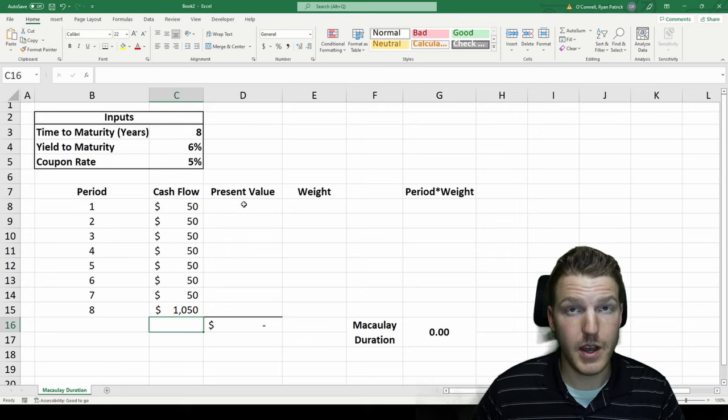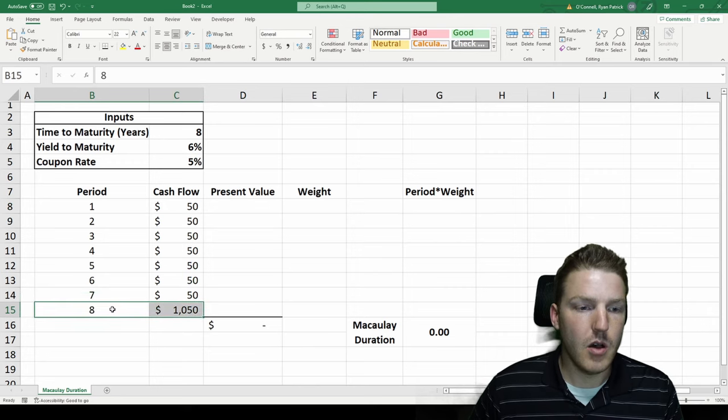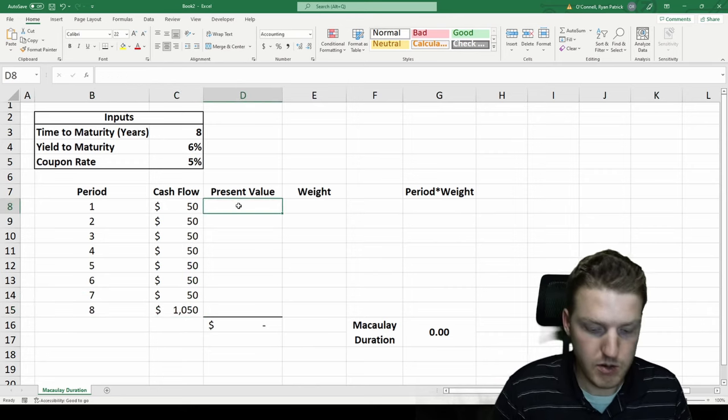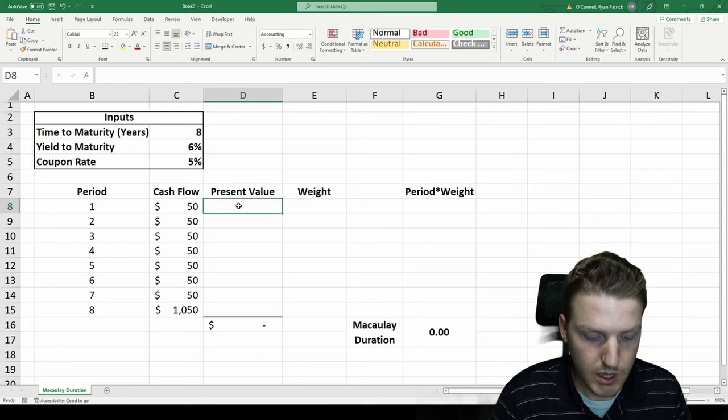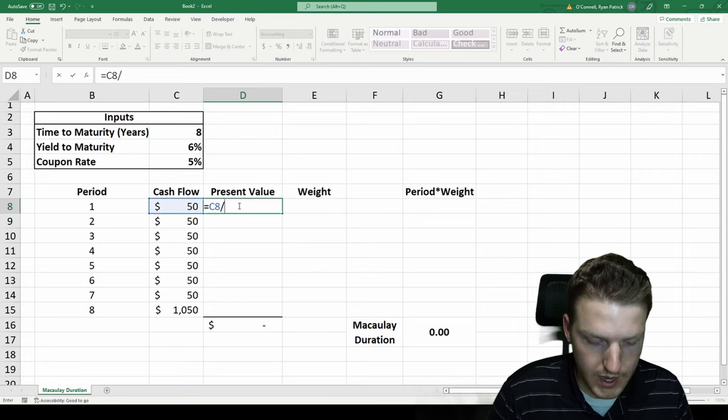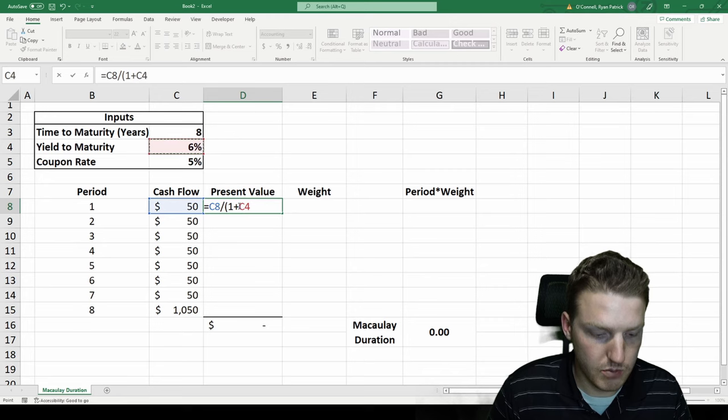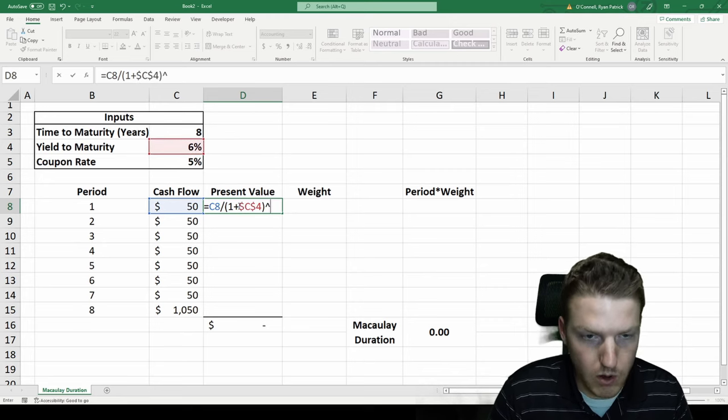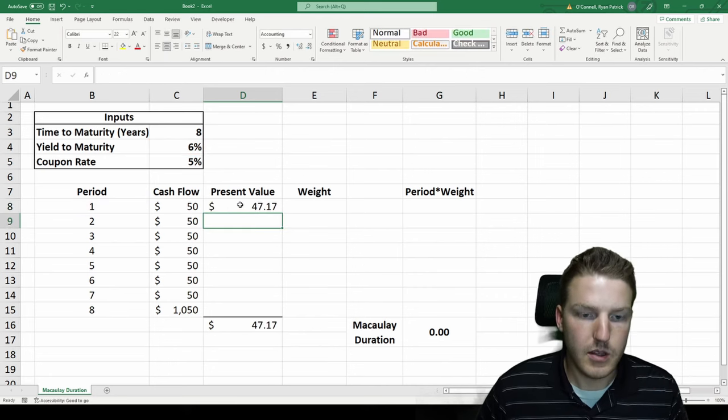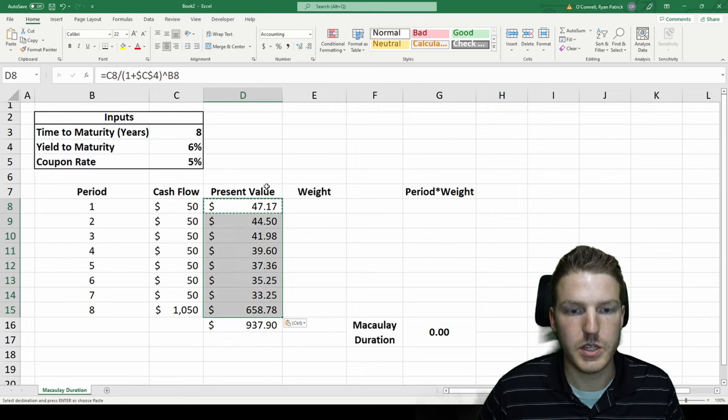Now, for each period, we need to find the present value back to today. So in period eight, we're going to be receiving this amount of money, but we have to discount it eight years at the current market rate to get its present value today. So this will just be equal to the cash flow divided by one plus the yield to maturity to the power of the period. So it's one year out, and then for the rest of these, their denominators will increase.